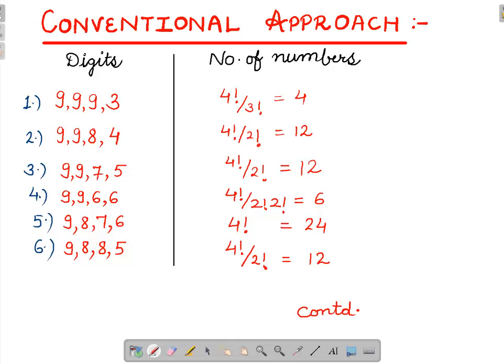Either the digits will be 9, 9, 9, 3 or the second case 9, 9, 8, 4 and so on. So if we take the very first case, since 9, 9, 9, 3 are the digits in this case,